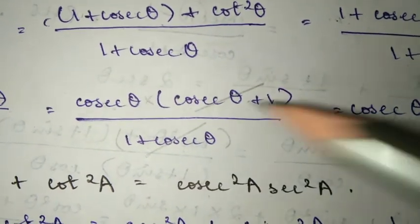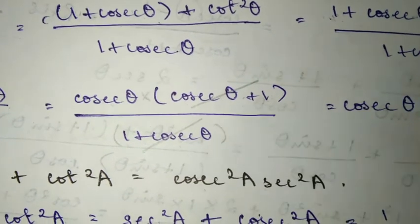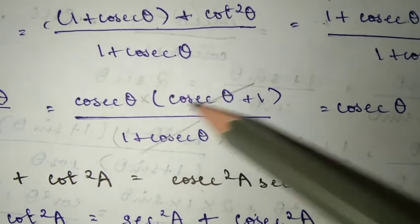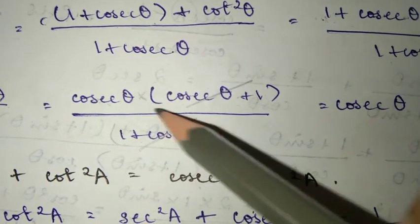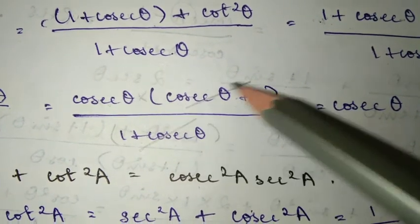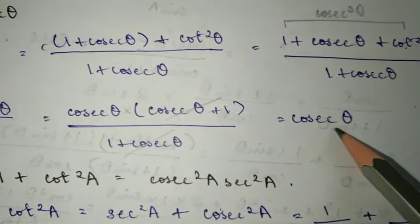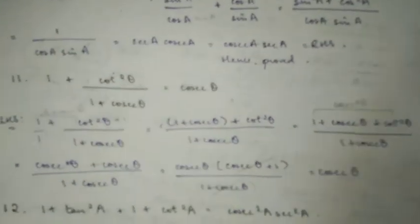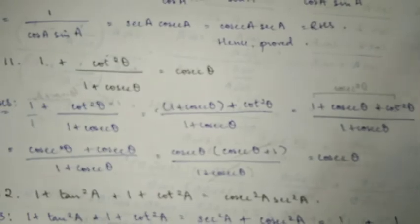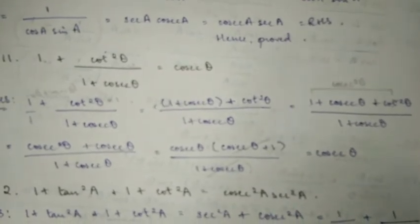Now, cosec plus 1, 1 plus cosec theta, they are the same thing because 1 plus 2 is the same as 2 plus 1. It's addition, so the order doesn't matter. So we can cancel: cosec theta in the bracket multiplied, we can cancel. This equals RHS, hence proved.